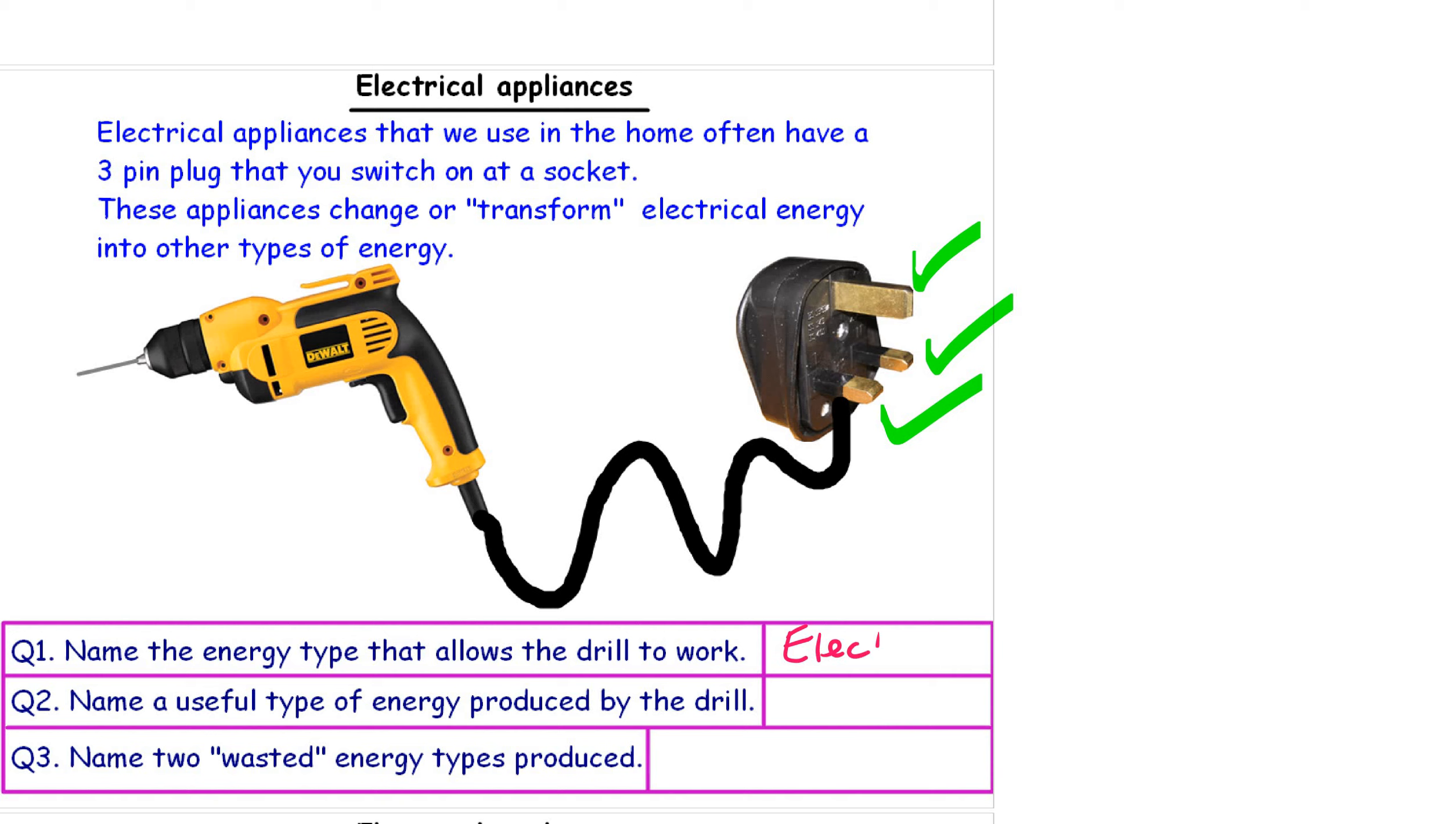I wonder whether you got the right answers. Name the energy type that allows the drill to work, that will be electric. Watch how you spell electric. Question two, name a useful type of energy produced by the drill: movement, or the posh scientific word, kinetic. And two wasted types of energy, surely you got sound, but the drill bit will also get very very hot.